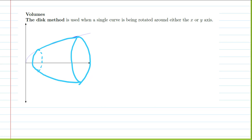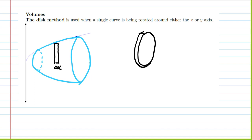Let's start with an approximating rectangle. If I start with an approximating rectangle of width delta x, the idea is we're creating a solid by rotating that around. If I were to do that, I would create a disc. So imagine a very thin slice — this is a disc, and its thickness in this direction is going to be delta x. So then what would be the radius of this disc?